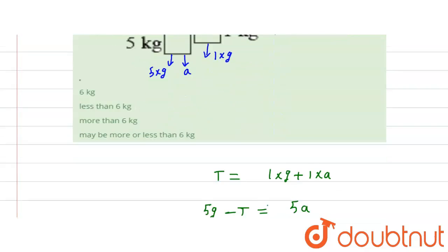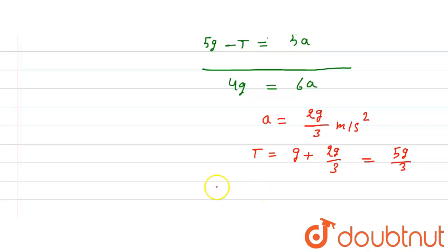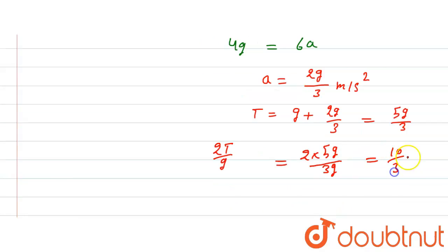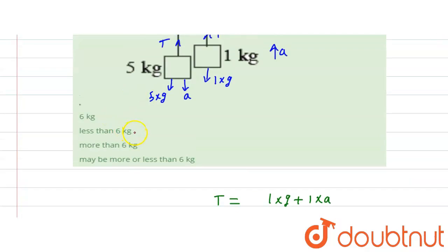The spring balance reading is 2T divided by g. So it is 2 times 5g by 3 divided by g, which equals 10 by 3 kg, that means less than 6 kg. We can check the options, so the second option is correct: less than 6 kg. This is the solution.